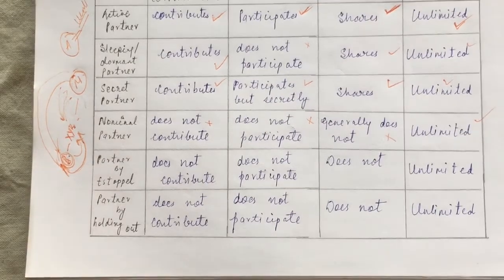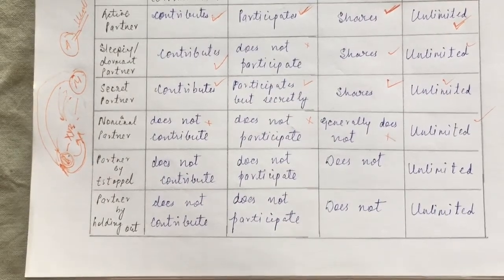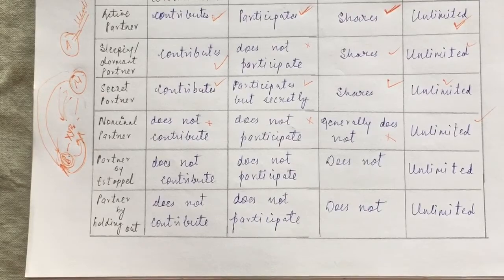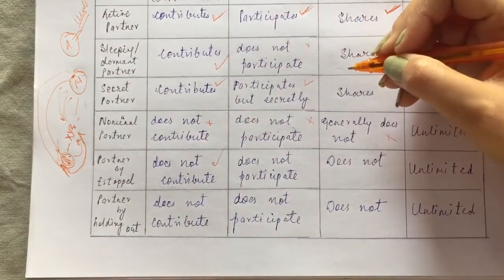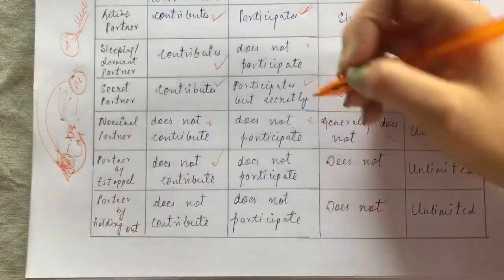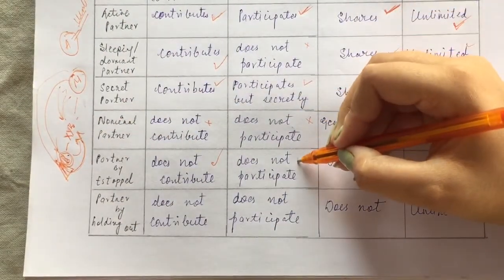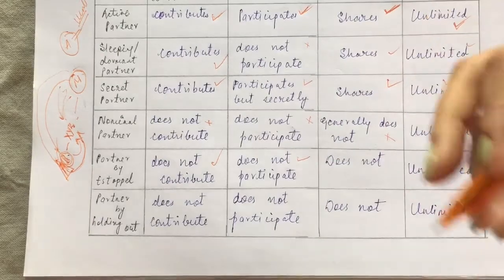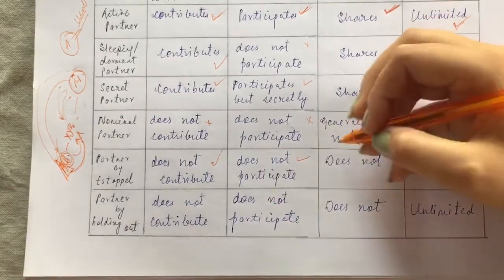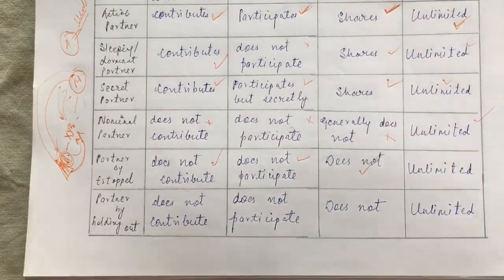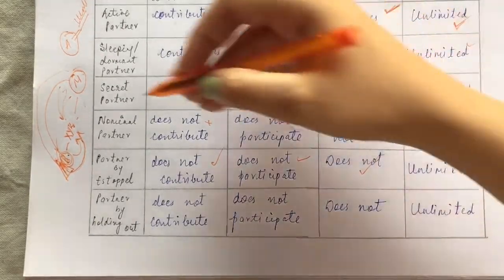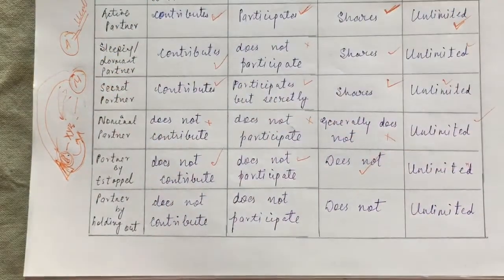So, a partner by estoppel does not contribute capital, does not participate in management, and does not share in profits and losses. But their liability is unlimited, because their role and actions created the impression that they were a partner.